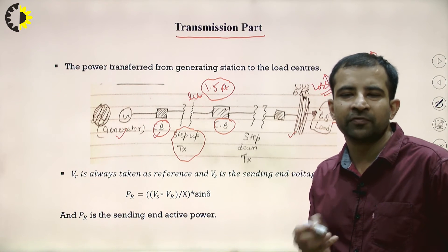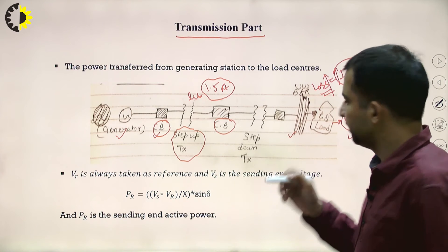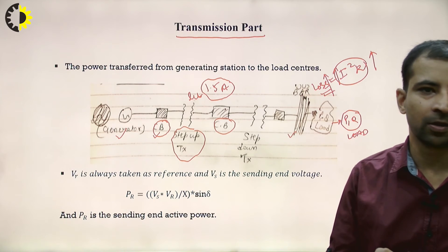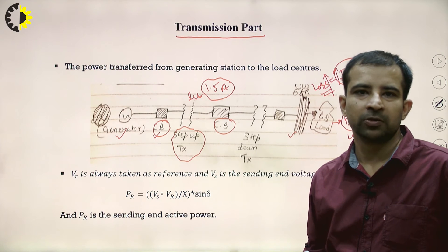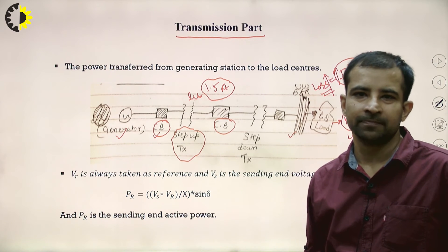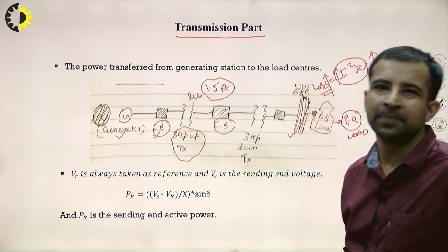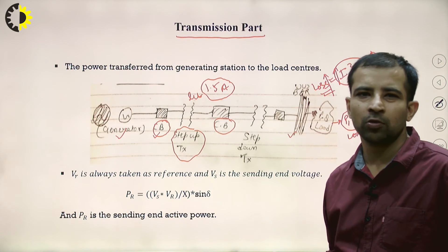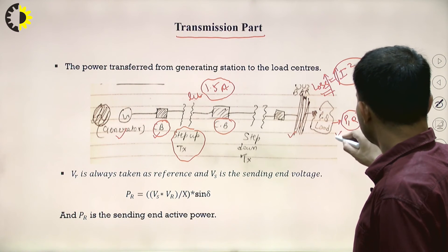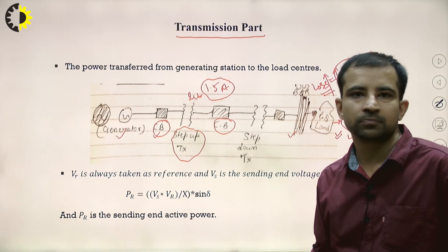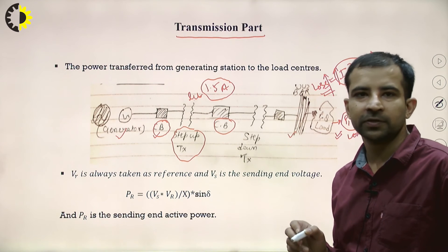Different types of buses are defined by which quantities are known: if P and Q are known it is a PQ bus; if P and delta are known it is a PV bus (generator bus). These different bus terminologies and load types will be studied further in power systems.